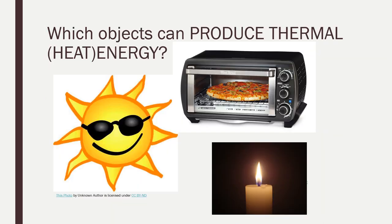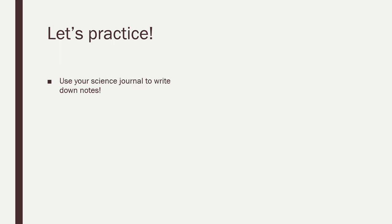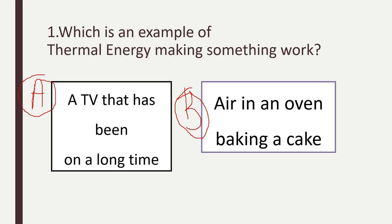Which objects can produce thermal energy? There are many objects that can produce or make thermal energy. These are some of the most common ones: the sun, an oven, a candle. Now let's practice. Use your science journal to write down notes. Number one: which is an example of thermal energy making something work? Pause the video and choose A or B.